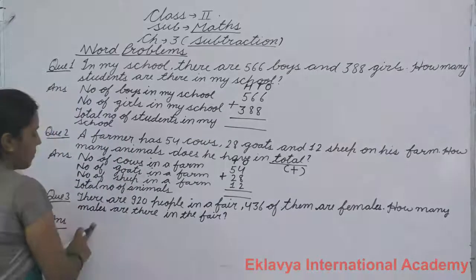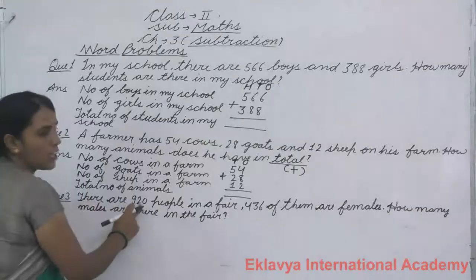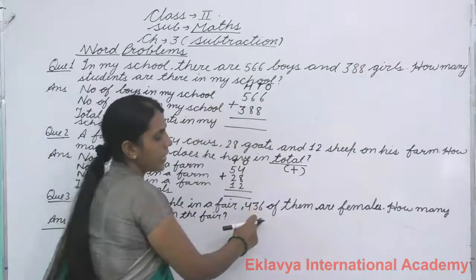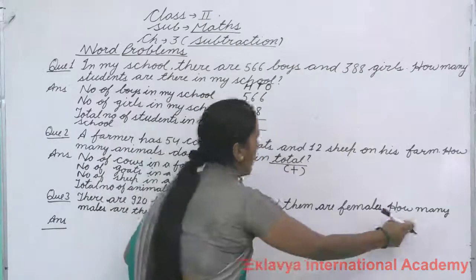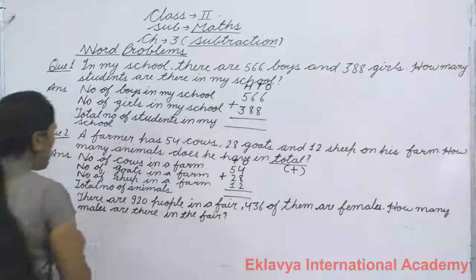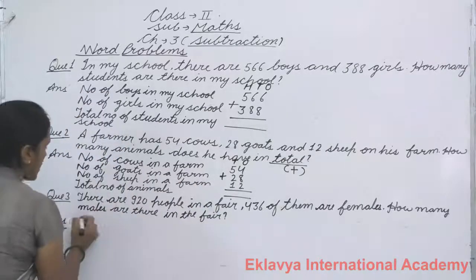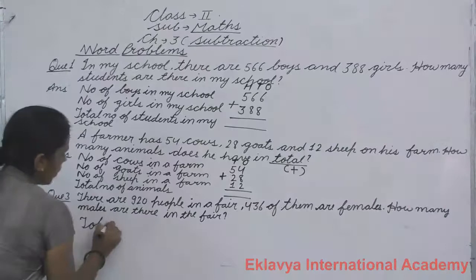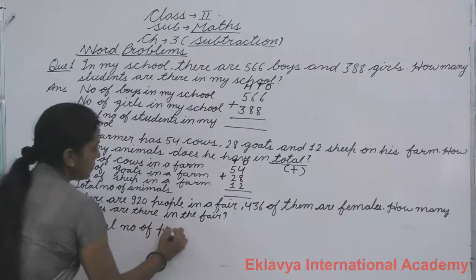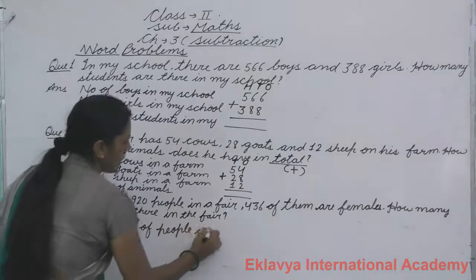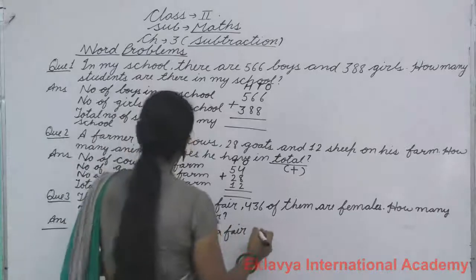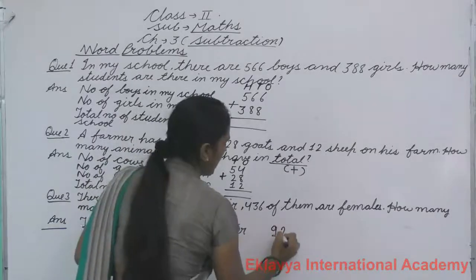Question number 3. There are 920 people in a farm. 436 of them are female. How many males are there in the farm? First of all we will make a statement. Total number of people in a farm: 920.